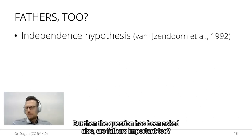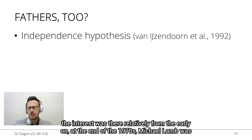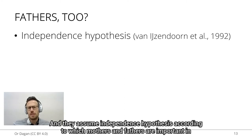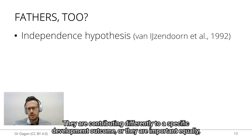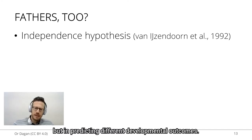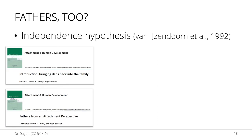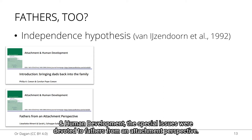But then the question has been asked: are fathers important too? A lot of research on fathers compared to mothers hasn't been done much, but the interest was there relatively early on. At the end of the 1970s, Michael Lamb was pioneering this research. Researchers assumed the independence hypothesis, according to which mothers and fathers are important in predicting developmental outcomes of children, but are important in different ways — contributing differently to specific developmental outcomes, or equally important but predicting different outcomes. Research in fathers actually surged recently in two special issues in Attachment and Human Development devoted to fathers from an attachment perspective.